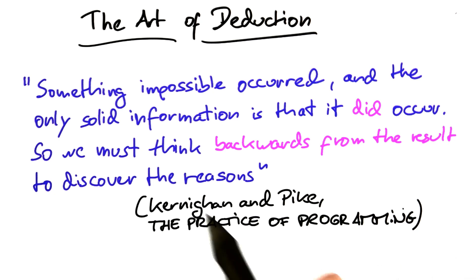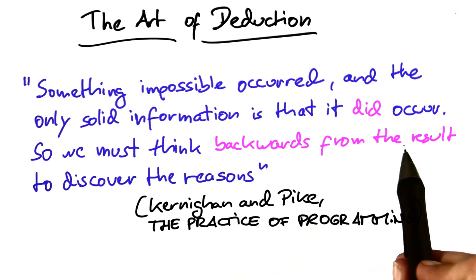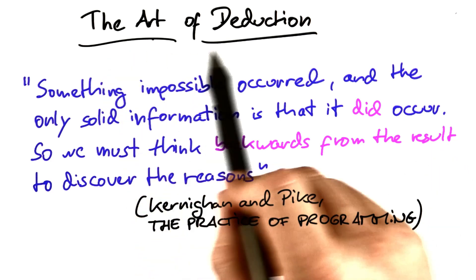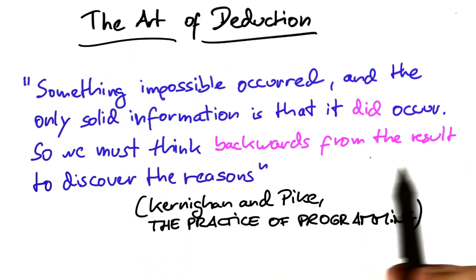So we must think backwards from the result to discover the reasons. Quote from Kernighan and Pike, The Practice of Programming: thinking backwards from the result. This is the art of deduction applied to debugging.